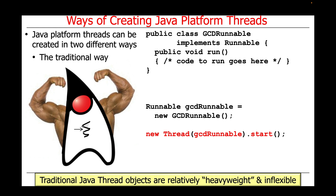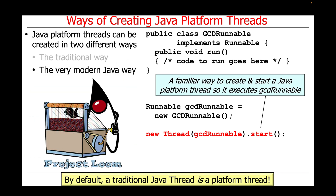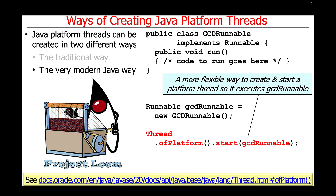Traditional Java thread objects are relatively heavyweight and inflexible, so there needs to be some other ways to create and use them. One very modern Java way — Java 19 and beyond — is to create and start a Java platform thread so it executes as a GCD runnable. This approach looks exactly the same as the traditional way, because by default a traditional Java thread is a platform thread.